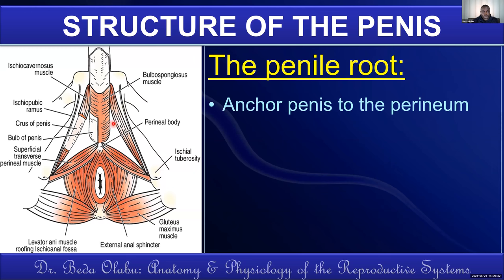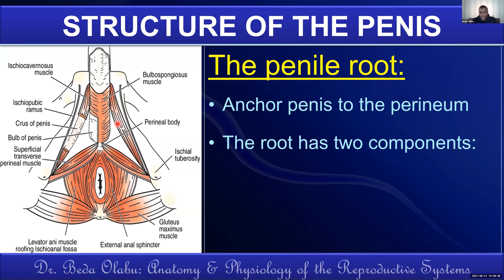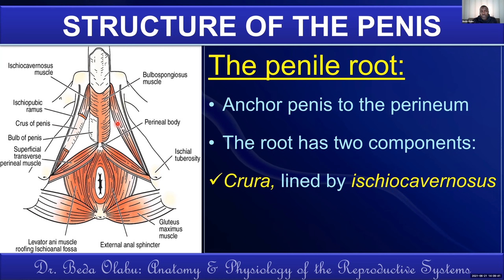The root of the penis refers to the part that holds the penis to the perineum. It has two key components: the crura of the penis — right and left — which are attached to the ischium or ischial tuberosity and continue to the corpus cavernosum of the shaft. The muscle covering the crura, coming from the ischial tuberosity to the corpus cavernosum, is called the ischiocavernosus muscle.